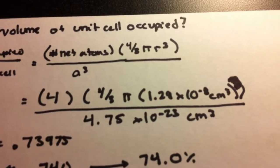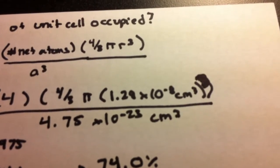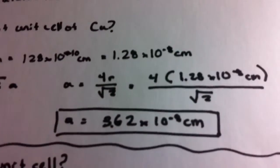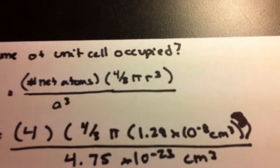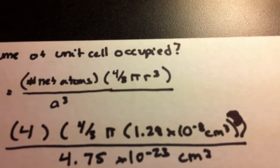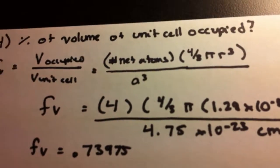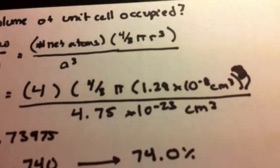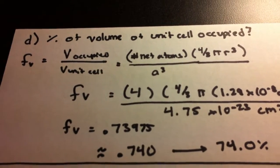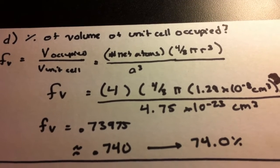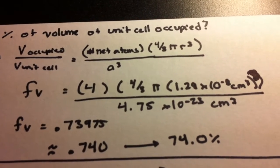Four over three, pi, and then it's radius cubed. Now, we were given the radius, and then we changed that into centimeters. But remember that it should be cubed. The radius should be cubed. And this is over our volume of the unit cell, which we calculated earlier. And again, plug and chug. The percentage of volume occupied would be around 74%.